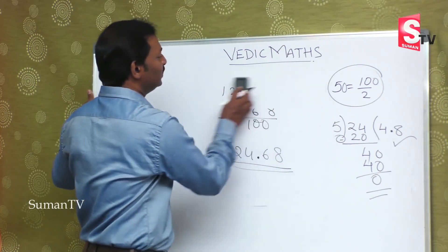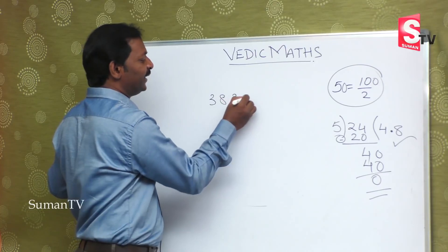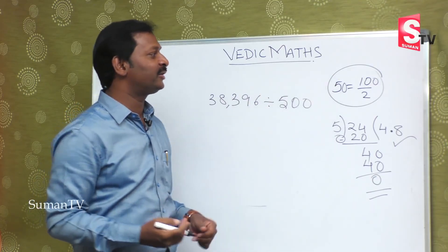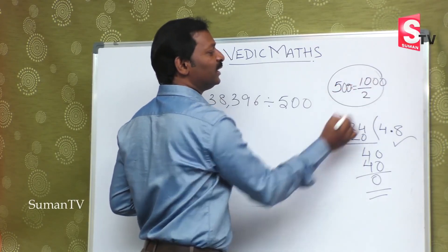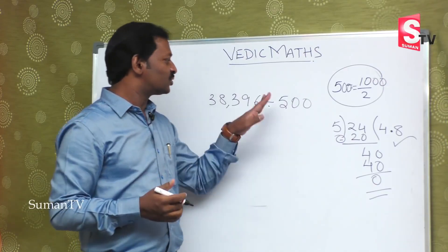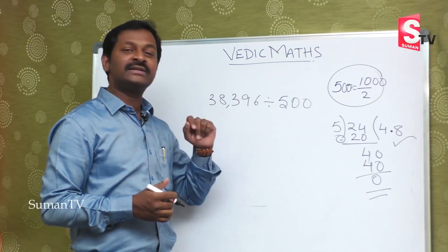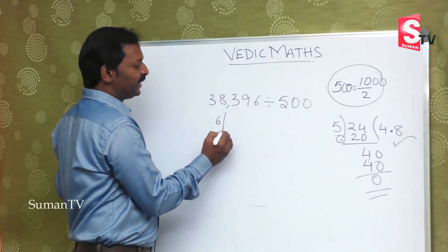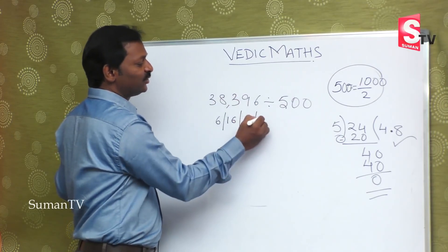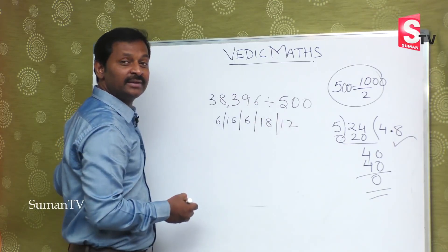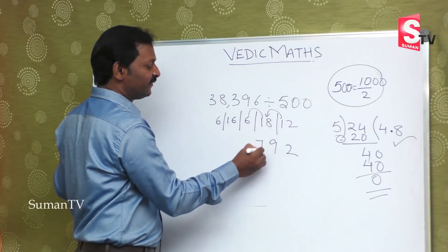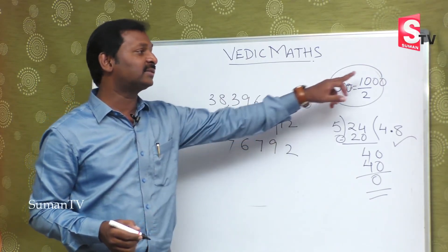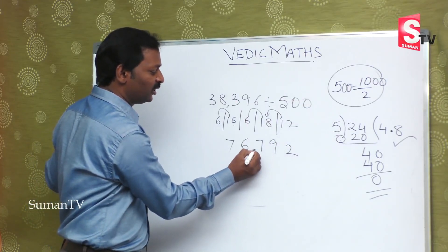We will see one more example. Thirty eight thousand three hundred and ninety six is divided by five hundred. Five means ten by two, fifty means hundred by two, so five hundred means thousand by two. Convert the division to two by thousand and multiply by two. Three twos are six, eight twos are sixteen, three twos are six, nine twos are eighteen, six twos are twelve. Apply the balancing rule: two, nine, seven, six, seven. By thousand — since five hundred gives thousand, place the decimal point three digits from the right. The answer is seventy six point seven nine two.